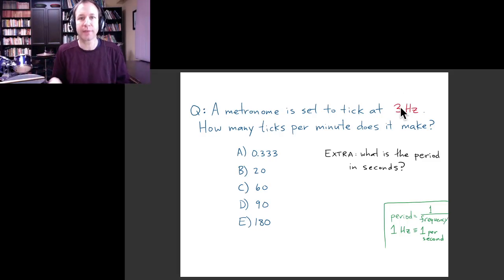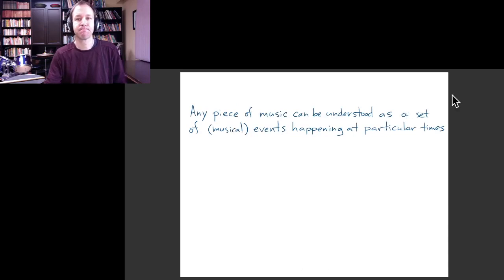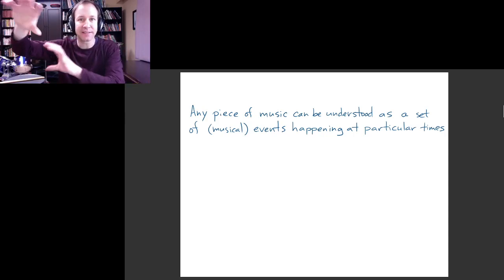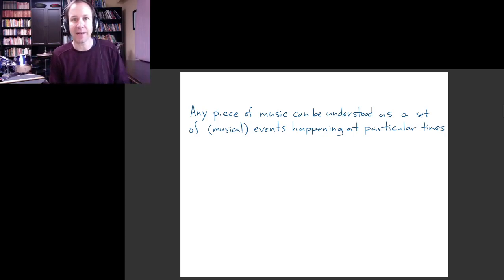Let's talk about time and events in the context of music. Time is very, very fundamental to music, and in fact, a piece of music can be understood as a series of musical events happening at particular times. So there's a drum beat, there's a clarinet starting up that plays a particular note, there's a violin note. Sometimes these things happen at the same time, and so the entire piece of music is basically just the sequence of these events, at least abstractly.